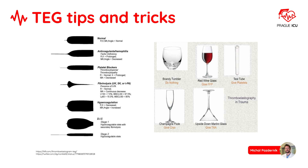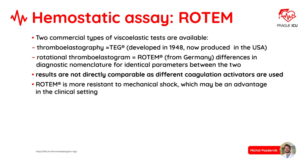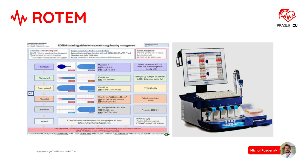ROTEM is the second assay. ROTEM is more resistant to mechanical shock, which may be an advantage in clinical settings. Here again we provide useful tips and tricks for interpretation of results. Thank you for watching Prague ICU and stay tuned for more educational videos.